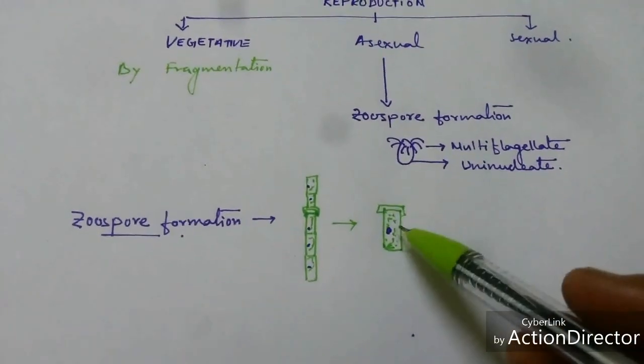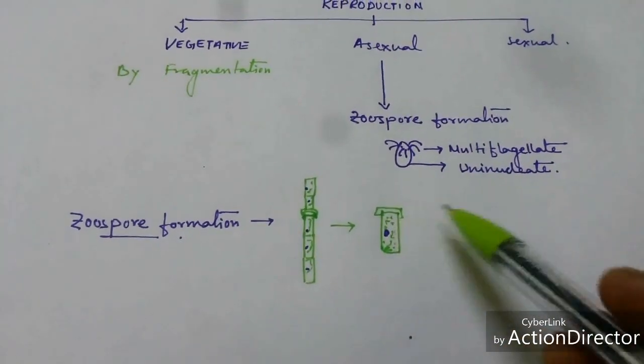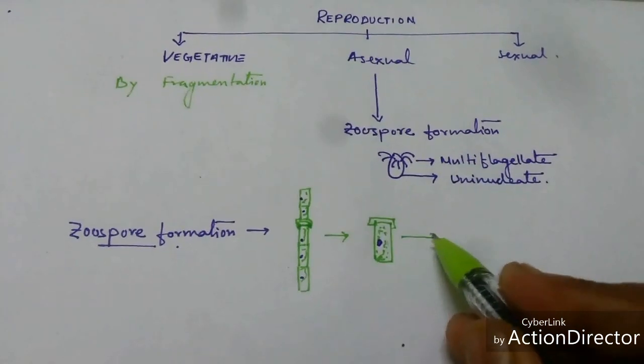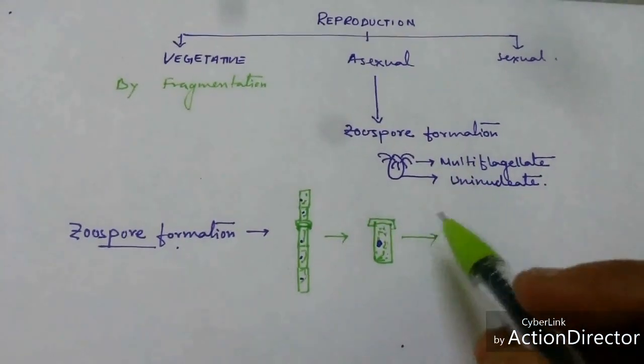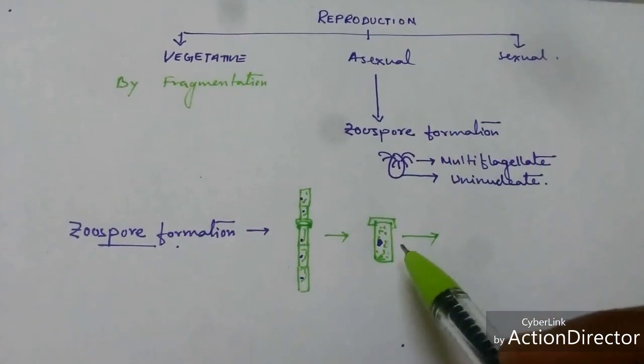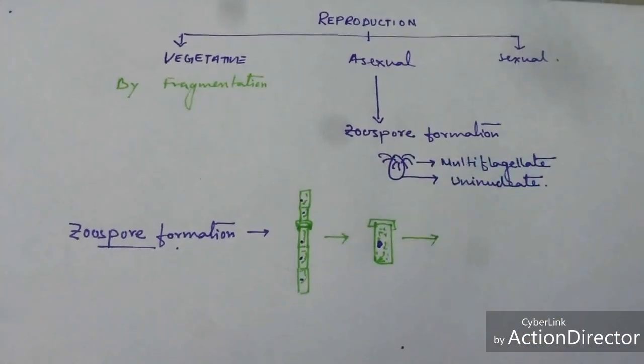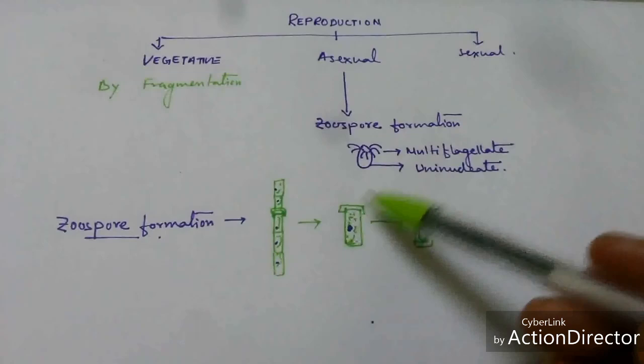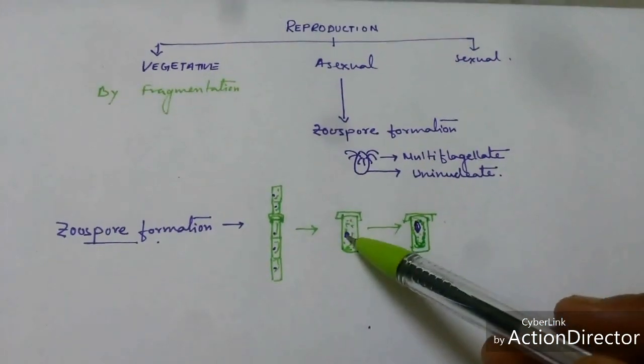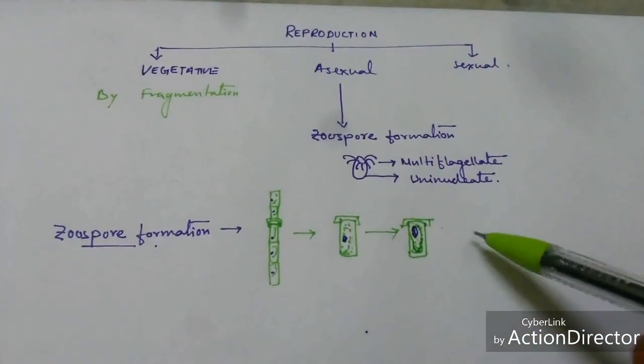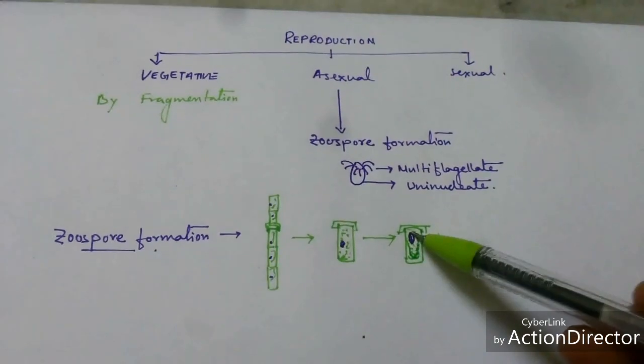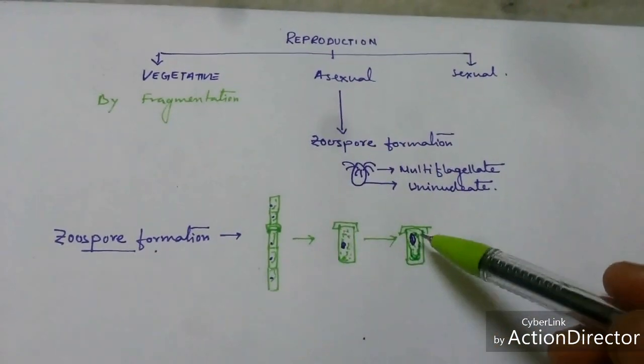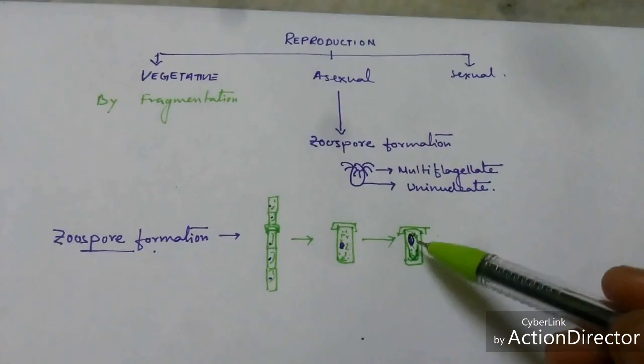Now at the time of formation of zoosporangium, the nucleus moves to one side and the protoplasm becomes round shaped or oval shaped protoplasm.